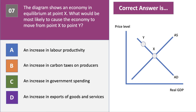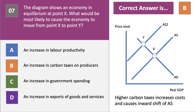Question seven is a diagram question showing an economy in equilibrium at point X. What would most likely cause the economy to move from point X to point Y? The correct answer is B. Higher labor productivity increases aggregate supply. An increase in government spending increases aggregate demand, as does an increase in exports. Higher carbon taxes increase the costs of producers — airlines, cement factories, and incineration plants — causing an inward shift of aggregate supply, moving the economy from point X to point Y.